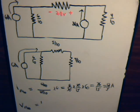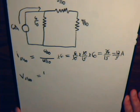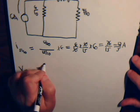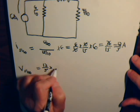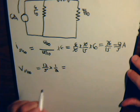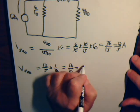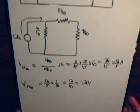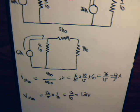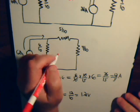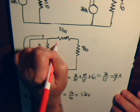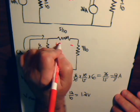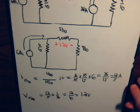The voltage drop equals the current times one-half ohm: (12/5) × (1/2) = 12/10 = 1.2 volts. Looking at the circuit, the current flows in the opposite direction through this resistor, so the polarity is reversed — plus-minus is flipped — giving 1.2 volts with opposite polarity.